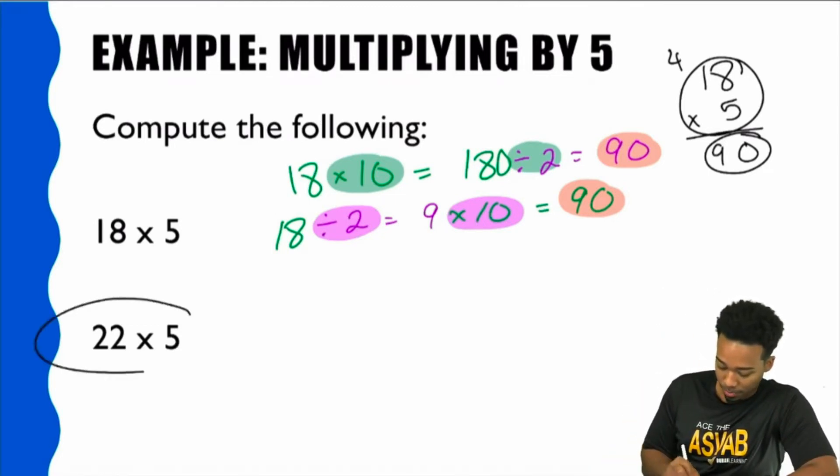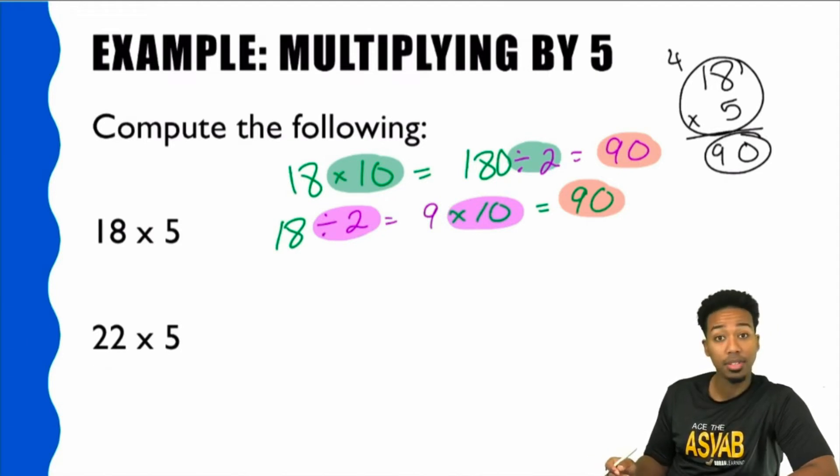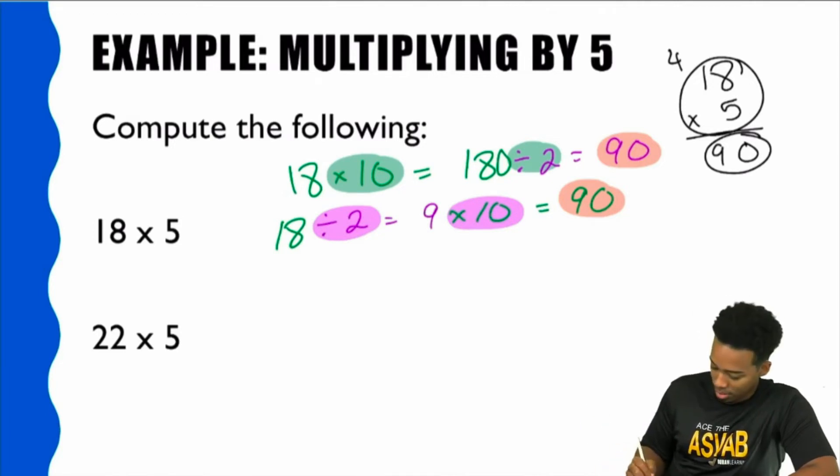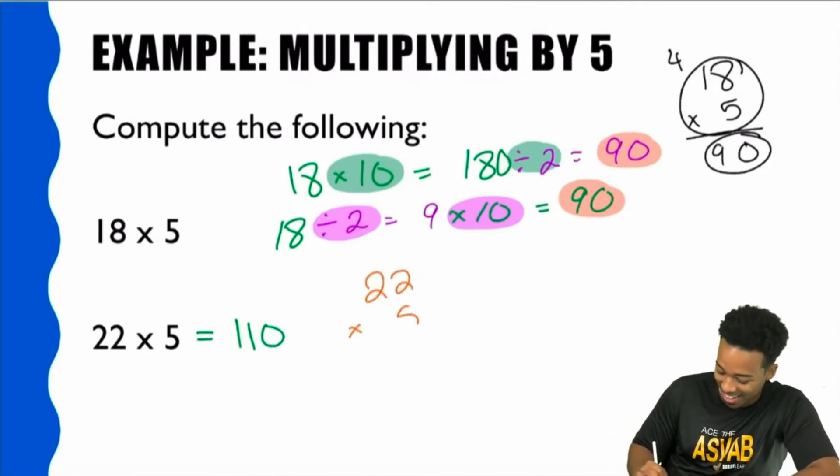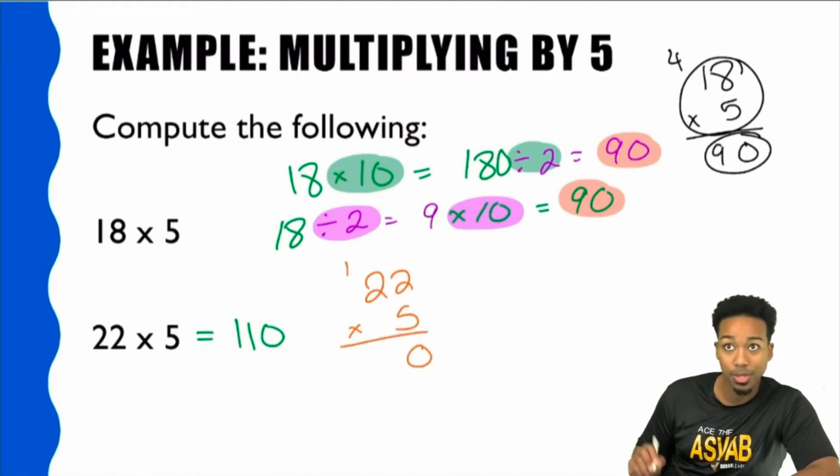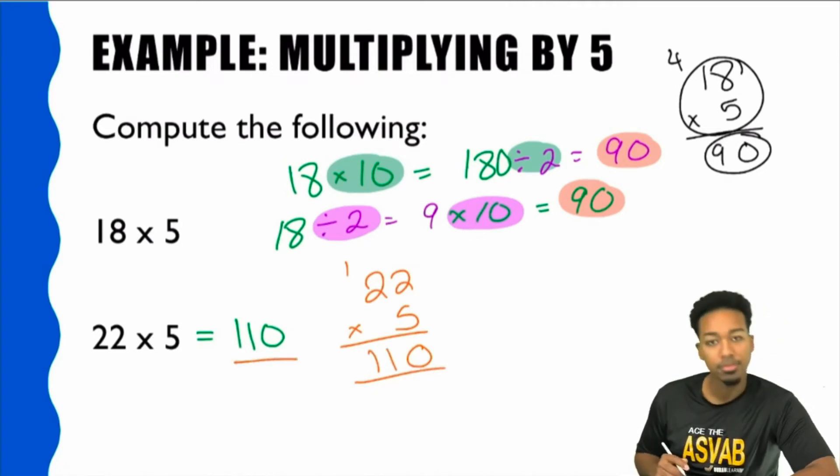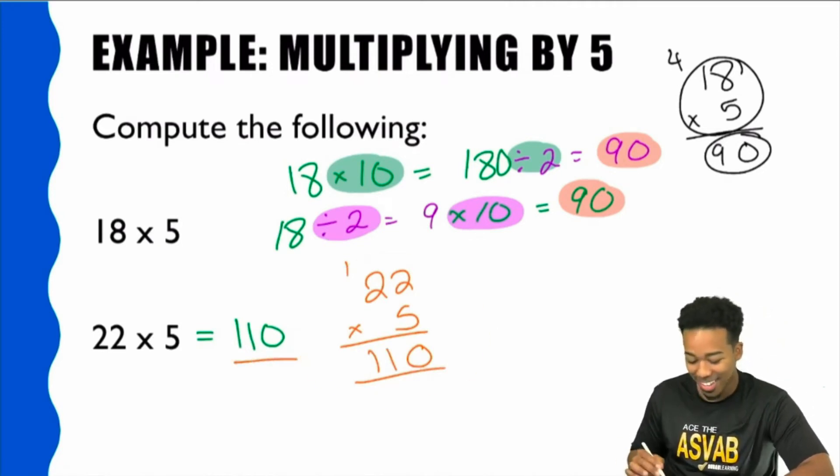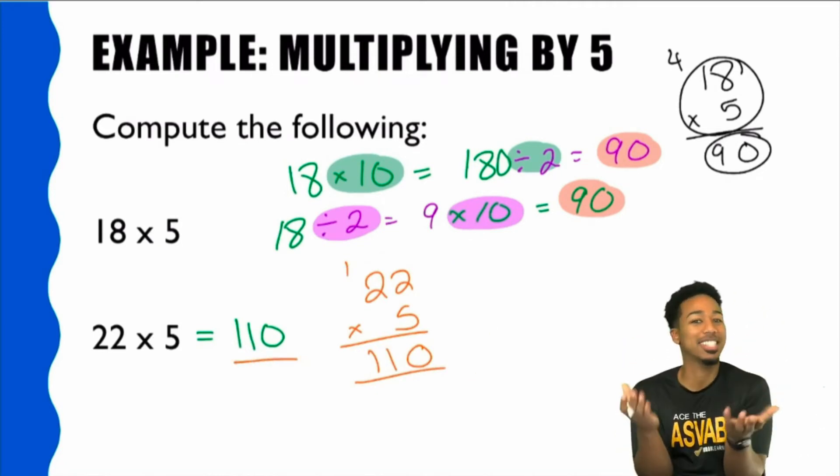So with that said, let's go ahead and try this one out over here. 22 times 5. Again, multiply by 10, 220, divided by 2, 110. There we go. 22 times 5 equals 110. Don't believe me? Go ahead. Let's waste some time. And let's go ahead and do 22 times 5. 2 times 5 is 10. 2 times 5 is 10. Carry the 1 is 11. 110. So again, by the time you're done writing that down, we could have already done it in our heads.